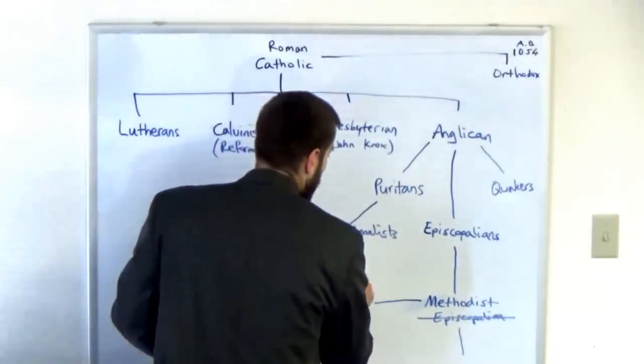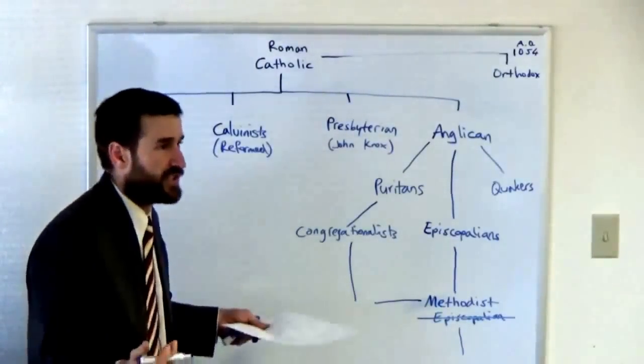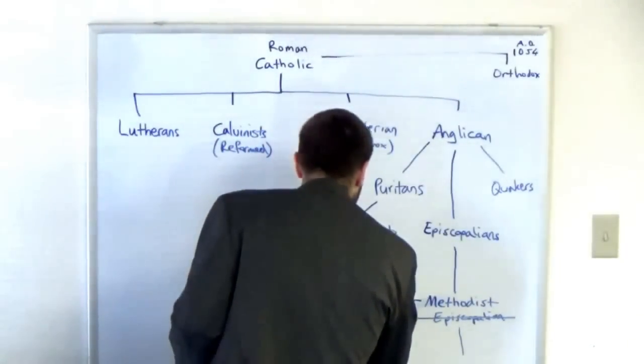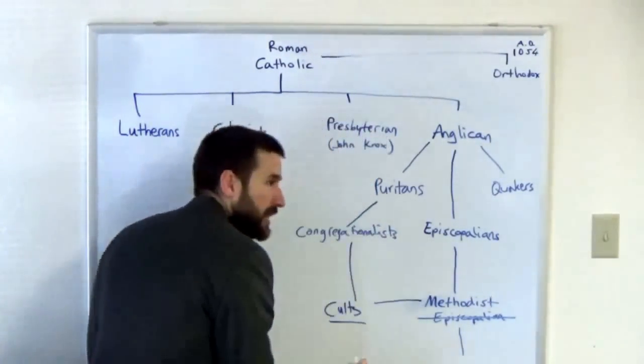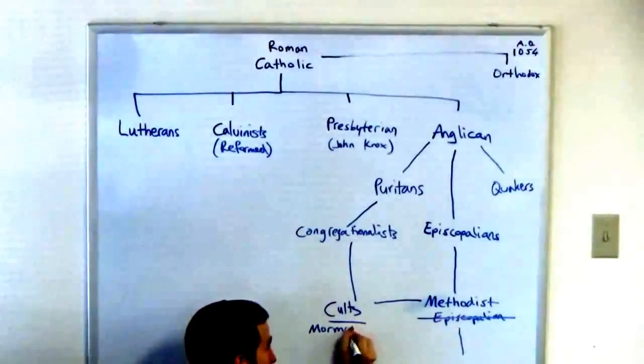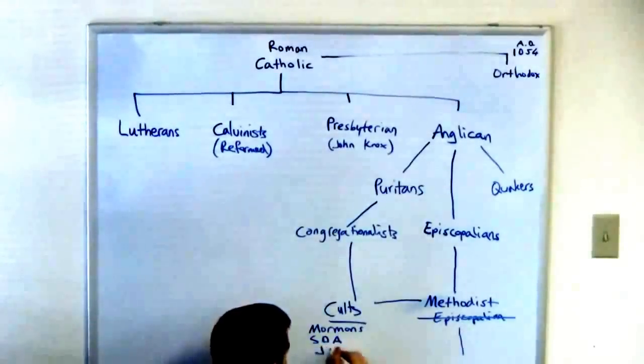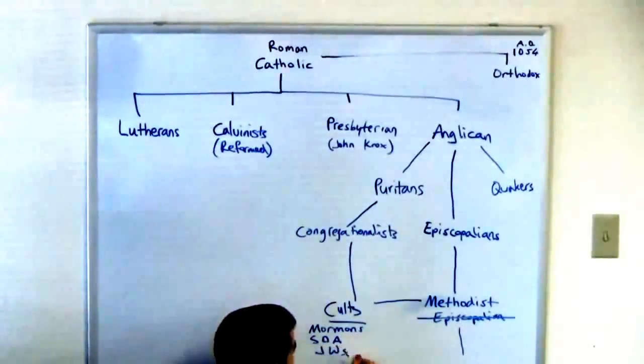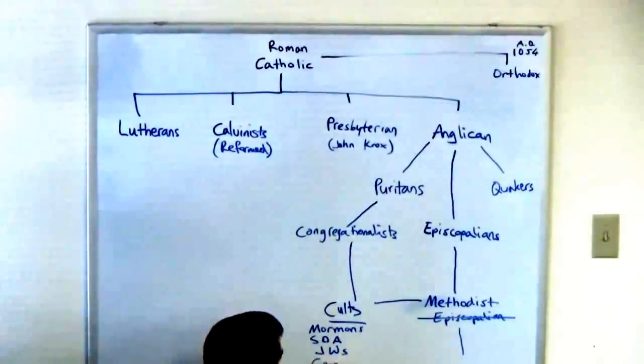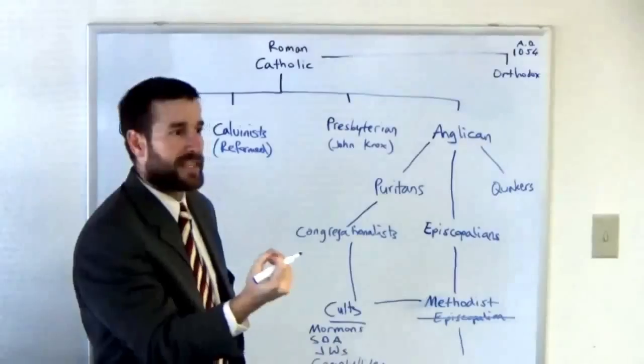Out of these type of people, Methodist type people, Congregationalist type people especially, you have all of these cults spring up in the 1800s. What do I mean by the cults that came out of these groups? We have of course the major cults: Mormons, Seventh-day Adventists, Jehovah's false witnesses, and the Campbellites.